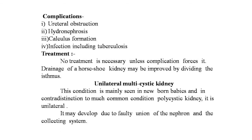The unilateral multicystic kidney is mainly seen in newborn babies, in distinction to the much more common polycystic kidney — it is unilateral. It may develop due to faulty union of the nephron and the collecting system. The only finding is the discovery of an irregular mass in the flank.